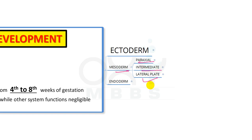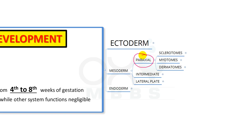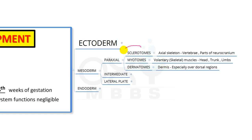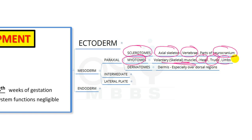Para-axial mesoderm has three parts: sclerotomes, myotomes, and dermatomes. From the sclerotomes, the axial skeleton is formed — this includes the vertebrae and parts of the neurocranium. From the myotomes, all voluntary or skeletal muscles of the head, trunk, and limbs are derived.